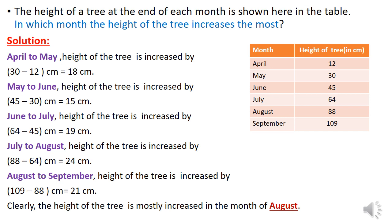We will take out the difference in the height of the tree between 2 consecutive months. So from April to May height of the tree is increased by 30 minus 12 equal to 18 cm. From May to June, 45 minus 30 equal to 15 cm. From June to July, 64 minus 45 equal to 19 cm. From July to August, 88 minus 64 equal to 24 cm. From August to September, 109 minus 88 equal to 21 cm.